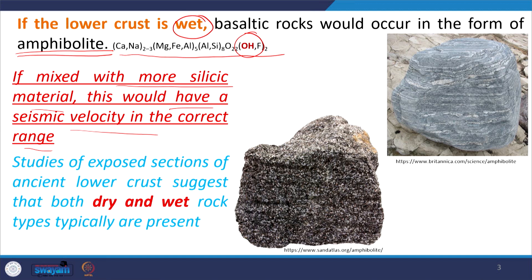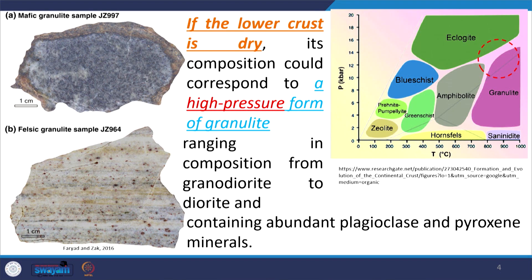So by intermixing amphibolite with silicic material, the seismic velocity fits correctly. The lower crustal composition can thus be of amphibolitic nature mixed with some felsic material. Wherever lower crustal rocks are exposed, they show both dry and wet conditions. In wet condition, the composition is amphibolitic. In dry condition — no water — the composition corresponds to a high-pressure form of granulite, ranging in composition from granulite to diorite containing abundant plagioclase and pyroxene minerals.